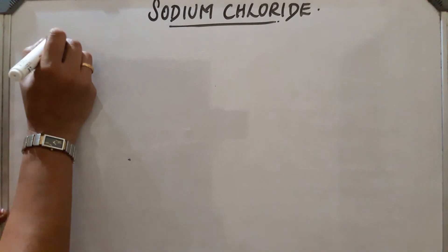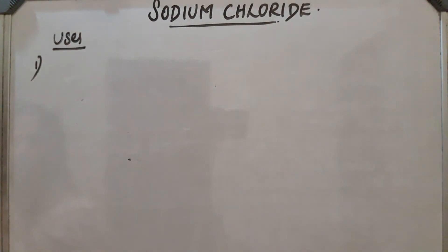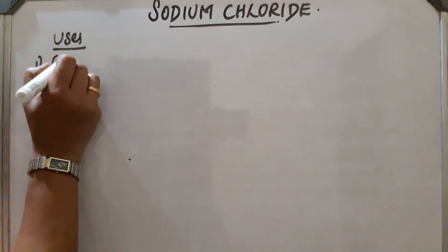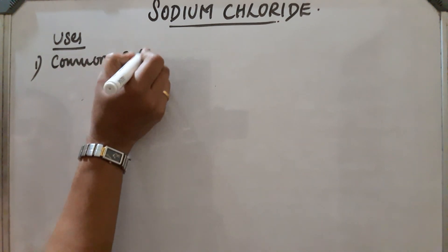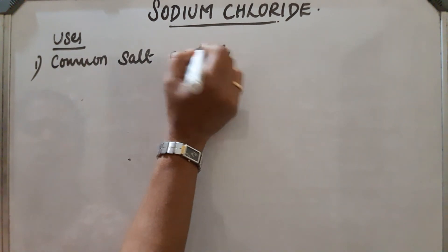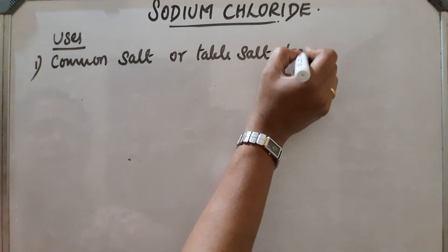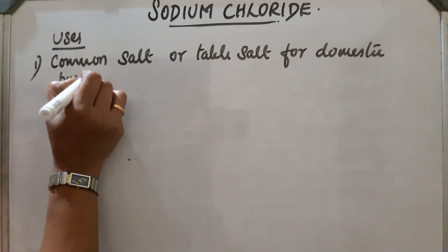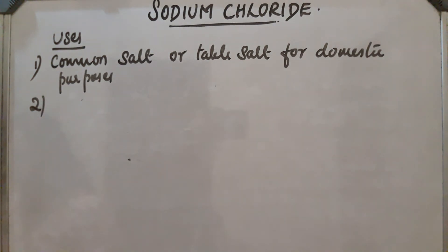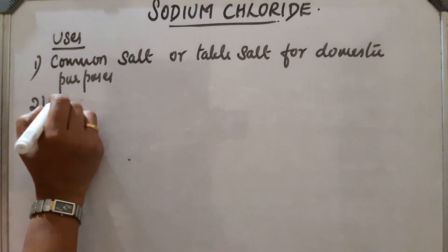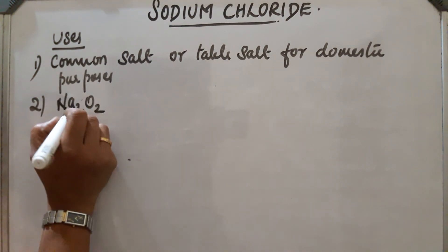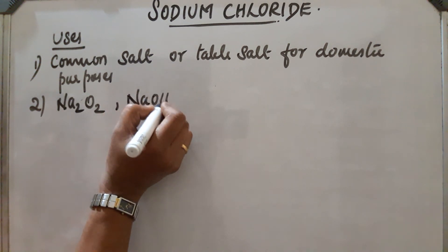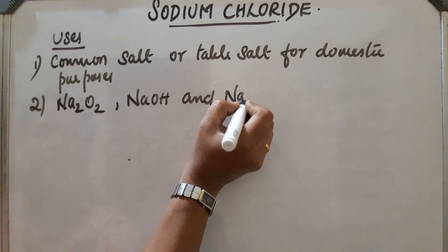Uses of sodium chloride: First, it is used as a common salt or table salt for domestic purposes. Second, it is used for the preparation of sodium peroxide, sodium hydroxide, and sodium carbonate.